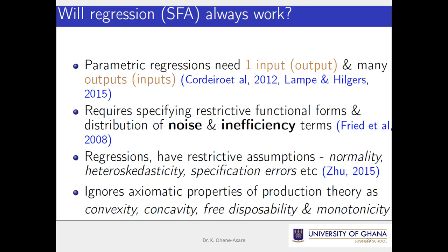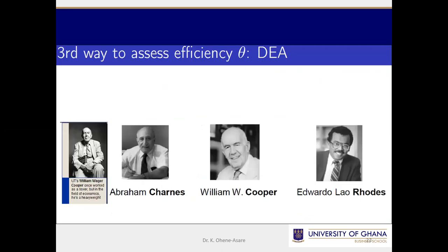Because of these complexities of parametric regressions and stochastic frontier analysis, people said enough. Another disadvantage of the parametric approach is that the properties of the production function — such as the convexity assumption, free disposability, and monotonicity — are not clearly embedded. So because of all this, some people prefer not to use regression or stochastic frontier analysis, and instead prefer the third way of assessing efficiency.